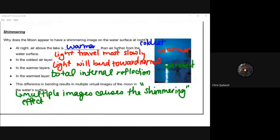Shimmering is a cool one as well that happens on water surfaces, specifically when the sun has set and the moon is out. At night, the air above lakes is warmer than the air from the water surface. In that colder air, light travels more slowly. In the warmer layer, light will travel towards the normal.